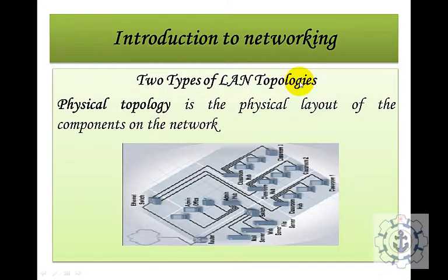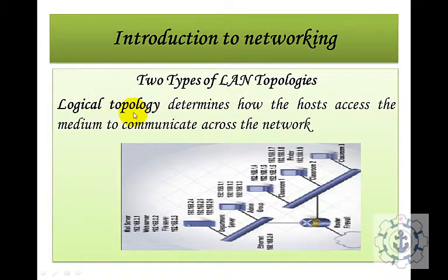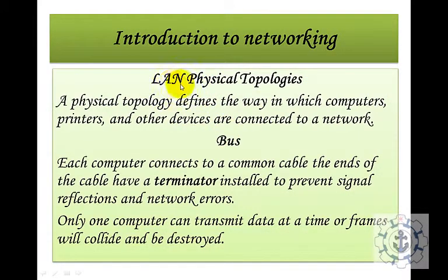There are two types of LAN topologies. Physical topology refers to the physical layout of the components of the network. Logical topology determines how hosts access the medium to communicate across the network. A physical topology defines the way in which computers and other devices such as printers are connected to a network.